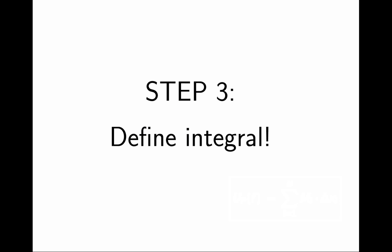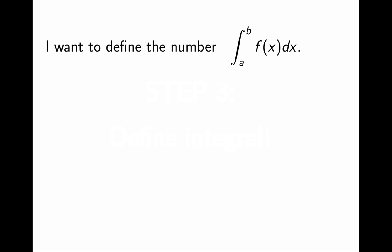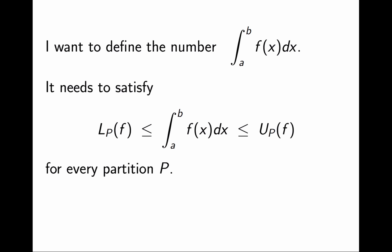Great! We are ready for the final step! Step 3. This is the hard one. How do I define integral out of all of this? What I know so far is that the integral must be a number, and it must be between all the lower sums and all the upper sums. Let's draw a picture. This is the real line. I choose one partition and compute its lower sum, it is a number. Then I choose another partition and I get another lower sum, and another, and another, and so on, until I get all possible lower sums.